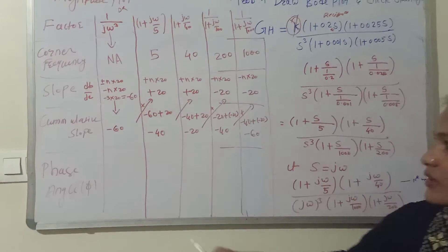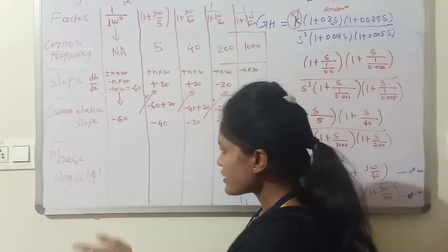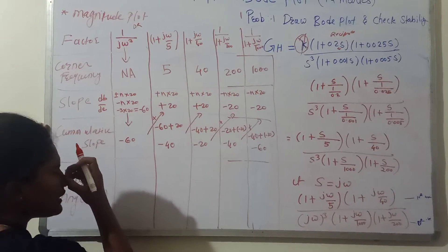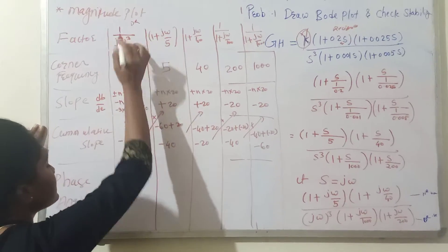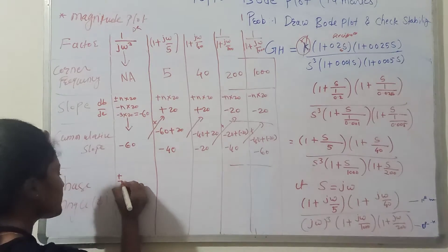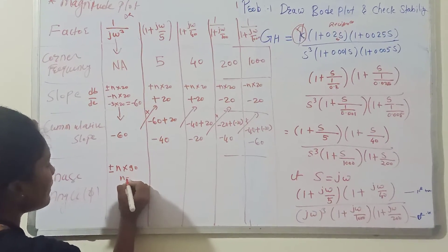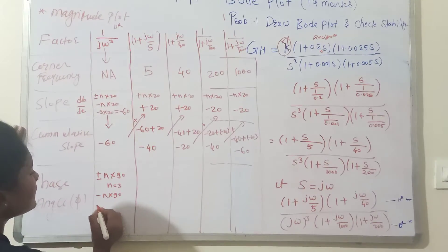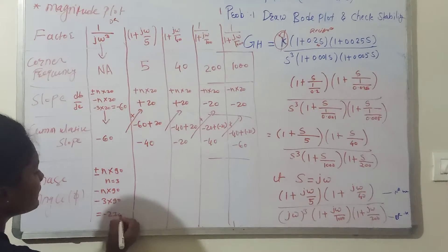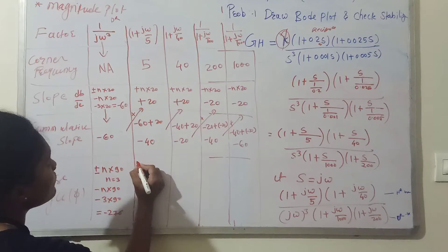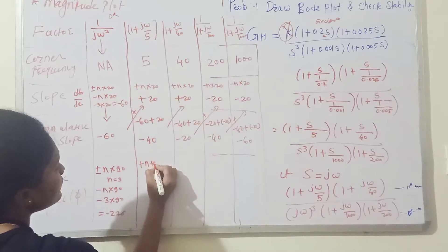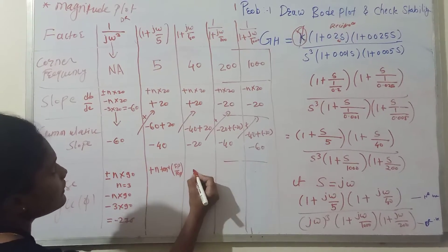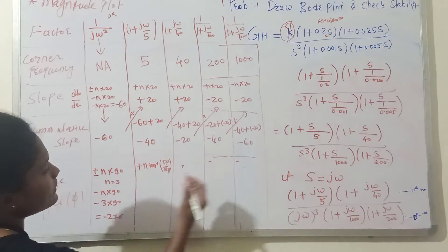Now we calculate the phase angle. For single s or constant value factors, the phase angle uses the formula plus minus n into 90. For the (jω)³ denominator factor, it is minus n × 90 = minus 3 × 90 = minus 270 degrees. For the other factors, the formula is plus minus n into tan inverse(imaginary pole / real pole). Numerator factors get plus sign, denominator factors get minus sign. Since n=1 for all, the formula simplifies to tan inverse(ω/real pole).